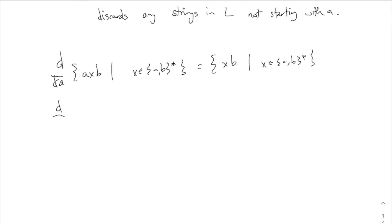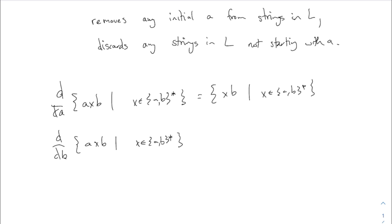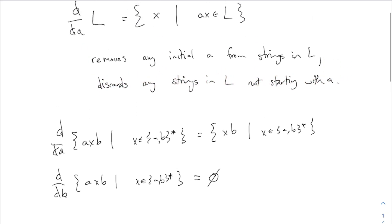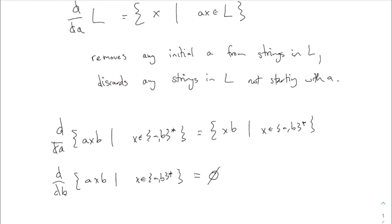How about the same set, but the derivative with respect to 'b' this time? This derivative with respect to 'b' will take any strings which started with 'b' and remove the 'b' at the beginning, and discard any strings which don't start with 'b'. Everything in this set starts with 'a'. When you take the derivative with respect to 'b', all of those strings get thrown away entirely. So you get the empty set.